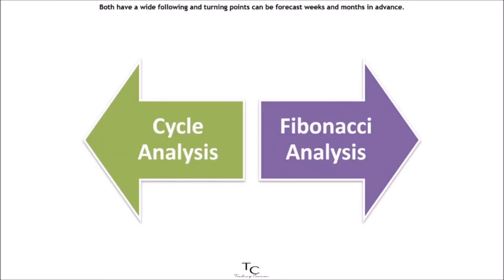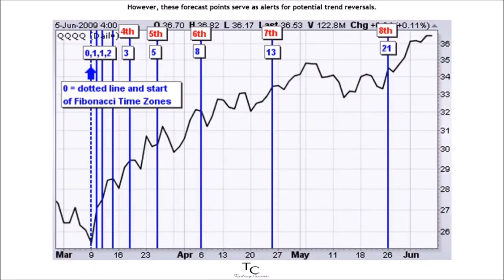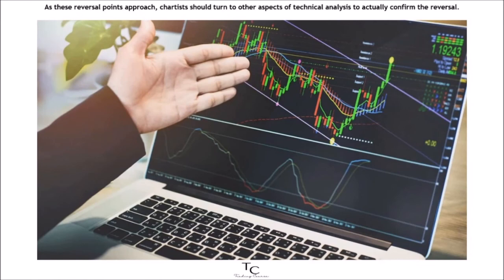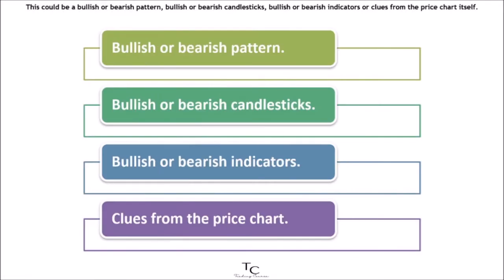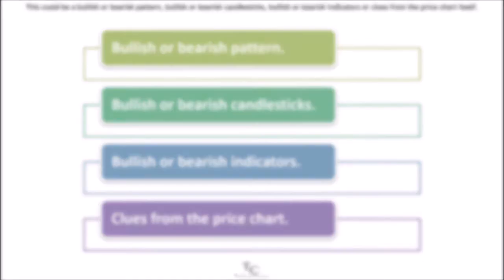Both have a wide following, and turning points can be forecast weeks and months in advance. However, these forecast points serve as alerts for potential trend reversals. As these reversal points approach, chartists should turn to other aspects of technical analysis to actually confirm the reversal. This could be a bullish or bearish pattern, bullish or bearish candlesticks, bullish or bearish indicators, or clues from the price chart itself.